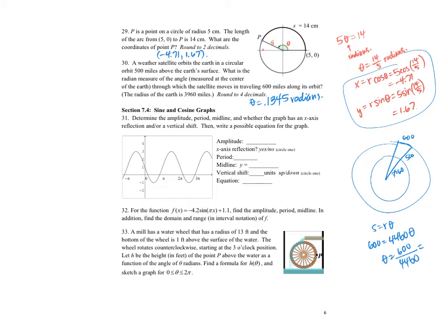Okay. Determine amplitude, period, midline and whether it has... Okay, so let's just do amplitude, period, midline. So it looks like it goes from 3 to negative 1. Halfway in the middle would be at positive 1. So the amplitude goes from 1 up to 3. So the amplitude is 2.